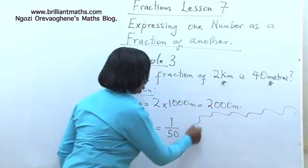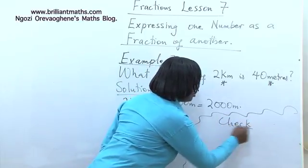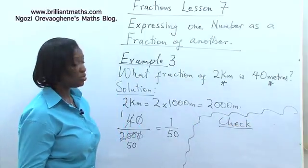So we're saying that 40 meters is 1 over 50 of 2 kilometers. Let's check if that is correct. Make it a habit to check your work all the time. It will help you.